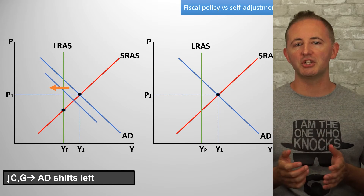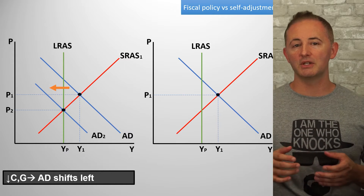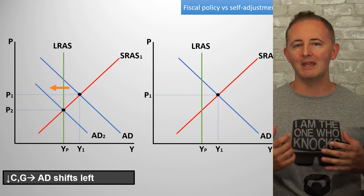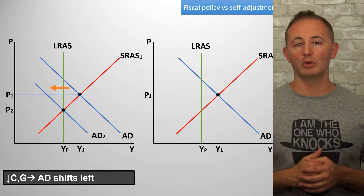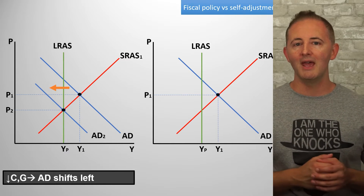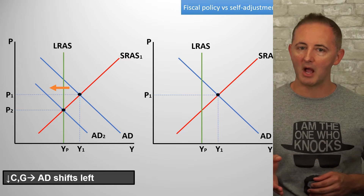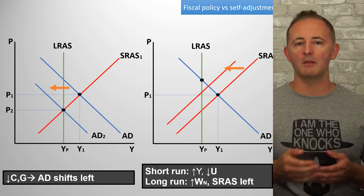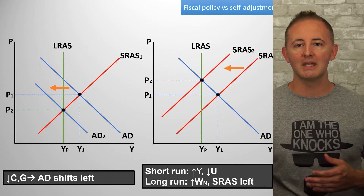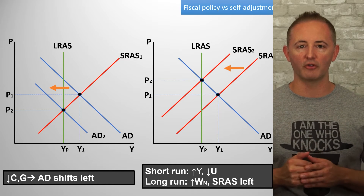Contractionary policy decreases AD, and that decreases both real GDP and the price level. It brings the economy back to long-run equilibrium via a leftward shift of the AD curve, and that's different than the self-adjustment process, which would bring the economy back to long-run following an increase in nominal wages and a leftward shift of the SRAS curve.